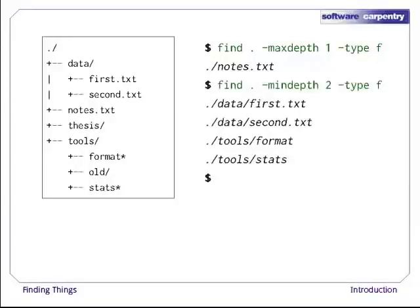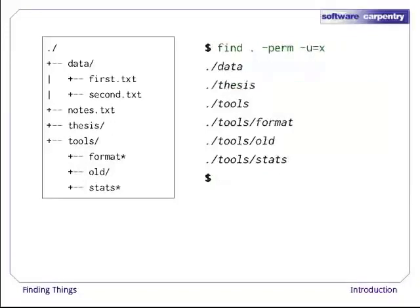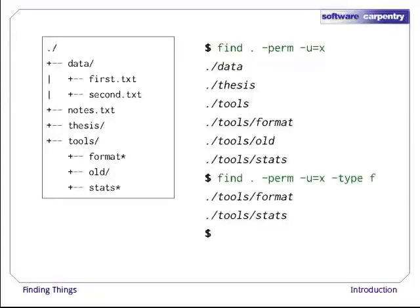The opposite of -maxdepth is -mindepth, which tells find to only report things that are at or below a certain depth. -mindepth 2, therefore, finds all the files that are two or more levels below us. And here's another option, -empty, which restricts matching to empty files and directories, of which we have two. We can search by permissions too. Here, for example, we can use -perm -u=x to find both files and directories for which the user has execute permission. Combine this with -type f to exclude directories, and voila, a list of runnable program files.